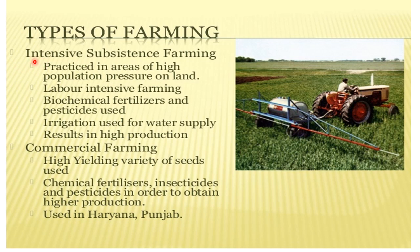The next type of farming is intensive subsistence farming, which is practiced over a larger part of India. The main features of intensive subsistence farming are: first, it is practiced in areas of high population pressure on land, meaning it is practiced in densely populated areas. Second, it is labor intensive — work is done with the help of manual labor.